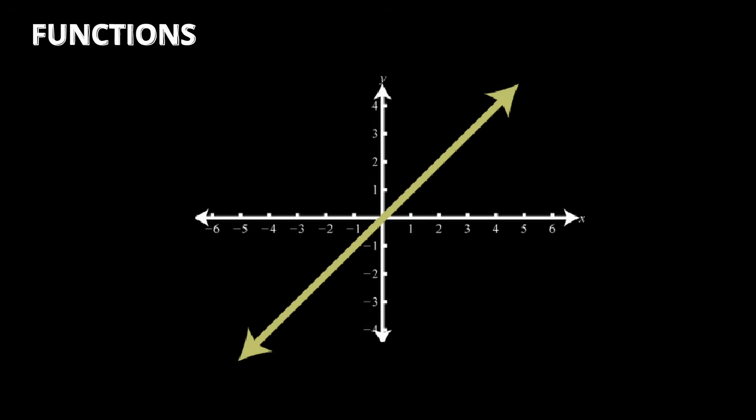You can use the vertical line test to see if a function is indeed a function. Simply make a vertical line through your graph, and if it intersects more than one point, it is not a function.